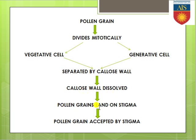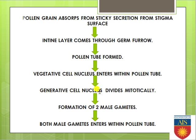The pollen grain — now containing the vegetative and generative cell with the dissolved callose wall — lands on the surface of the stigma. If the pollen grain is accepted by the stigma, it absorbs the sticky secretion from the surface of the stigma. The entine layer of the pollen grain then comes out through the germ furrow.